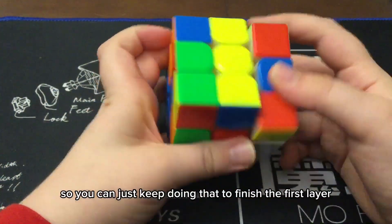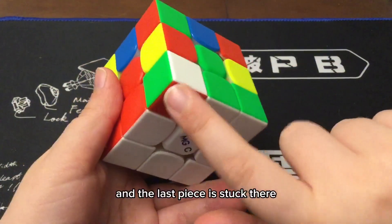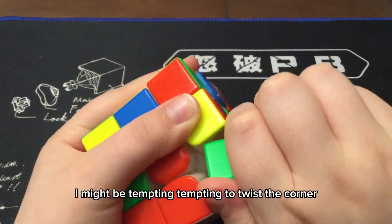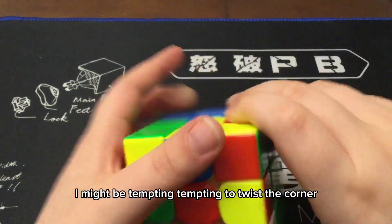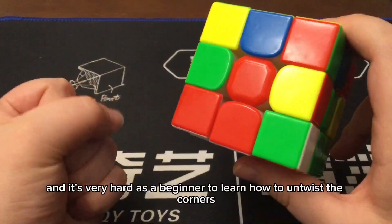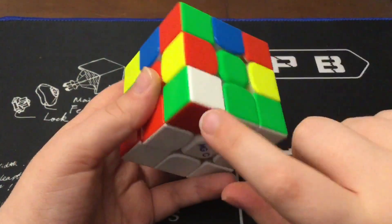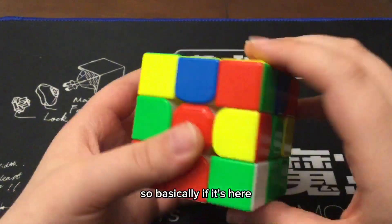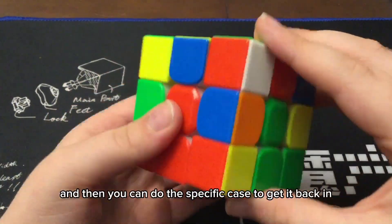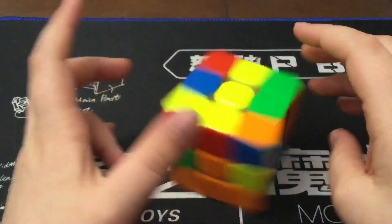So, you can just keep doing that to finish the first layer. Let's say something like this happens and the last piece is stuck there. It might be tempting to twist the corner. Just don't do that. If you twist the corner, it will ruin your Rubik's Cube and it's very hard as a beginner to learn how to untwist the corners. So, basically, if it's here, just do one righty algorithm to bring it out. And then you can do the specific case to get it back in.